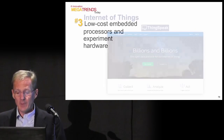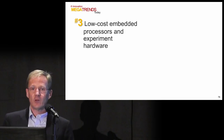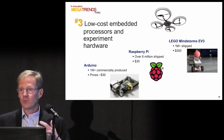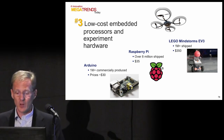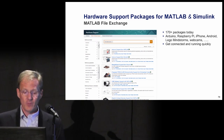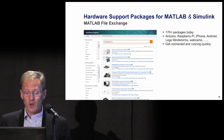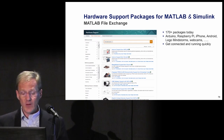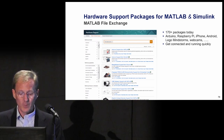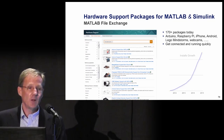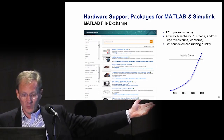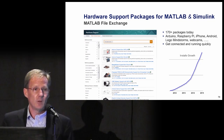The third big trend has been the growth of low-cost embedded processors and experiment hardware — Arduino, Raspberry Pi, Lego Mindstorms — none of them are more than a few years old. Also drones and other low-cost experiments. It's really quite spectacular how quickly these have jumped onto the scene and created maker communities. At MathWorks, we created 170 hardware support packages to support model-based design through MATLAB and Simulink, each one allowing you to program these devices — things like iPhone or Raspberry Pi — without knowing anything about those devices, using a familiar library of functions. We've seen over 300,000 downloads in the last year, showing really exponential growth.